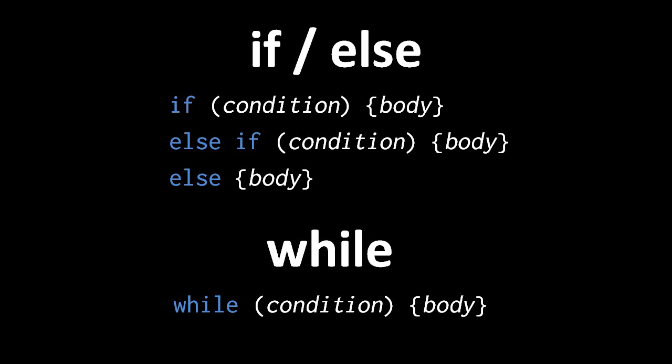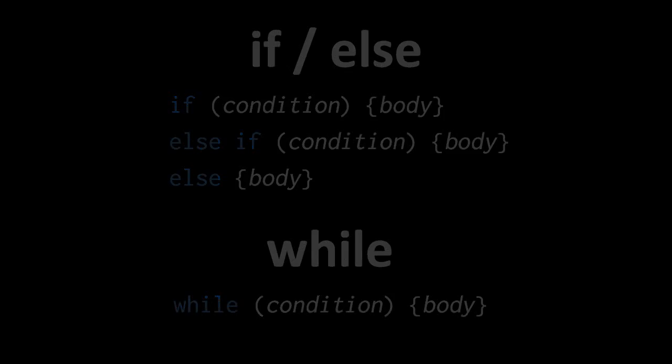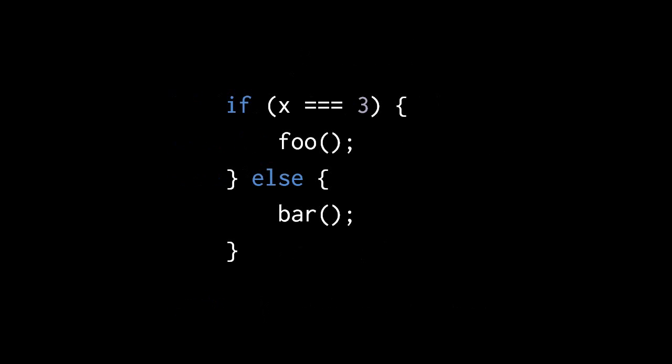Also note that there's no reserved word elif — you just write else space if. So for instance, here we have an if-else where the condition is: is x equal to 3? If so we're going to call the function foo, otherwise we're going to call the function bar. Depending upon style, there are different ways you would put white space around the curly braces, but this is one popular style.